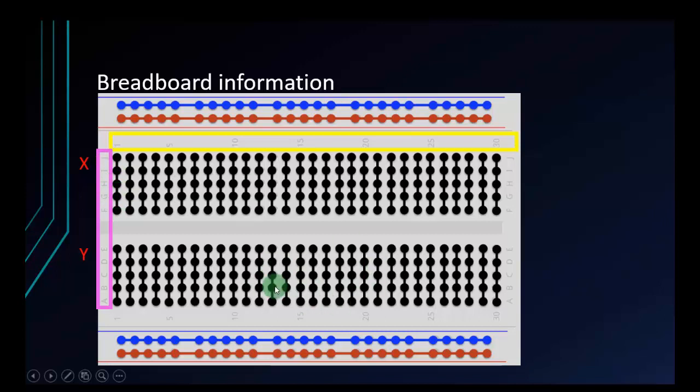Part Y is also same as X. That's it about the columns. But the rows are independent together. They are not connected with each other.